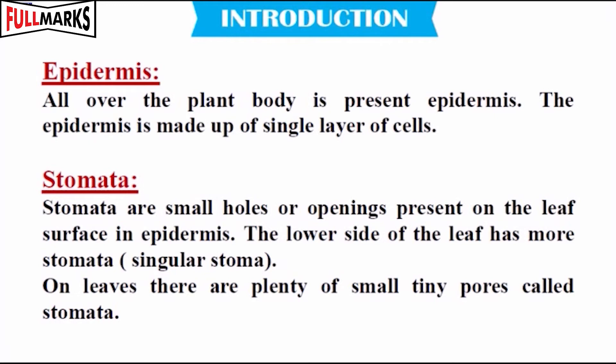Introduction. Epidermis: All over the plant body is present epidermis. The epidermis is made up of a single layer of cells. Stomata: Stomata are small holes or openings present on the leaf surface in epidermis. The lower side of the leaf has more stomata.